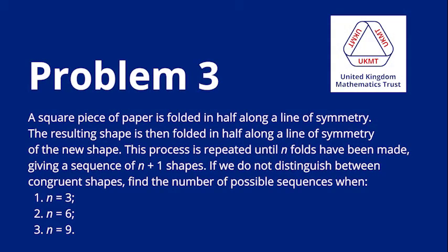Problem 3. A square piece of paper is folded in half along a line of symmetry. The resulting shape is then folded in half along a line of symmetry of the new shape. This process is repeated until n folds have been made, giving a sequence of n plus 1 shapes. If we do not distinguish between congruent shapes, find the number of possible sequences when